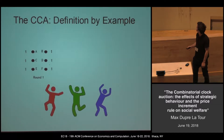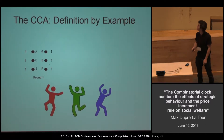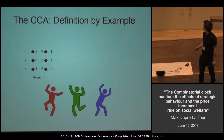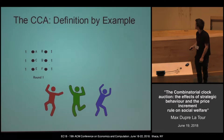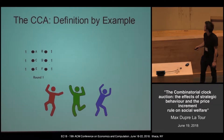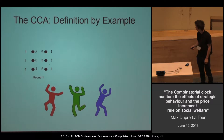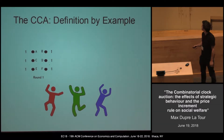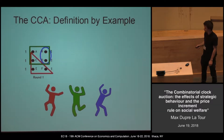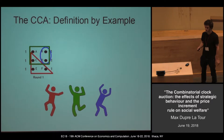I'm going to describe the CCA by an example. Here we have six items — A, B, C, D, E, and F — and three bidders. Every bidder makes a combinatorial bid; they choose a subset of the items.